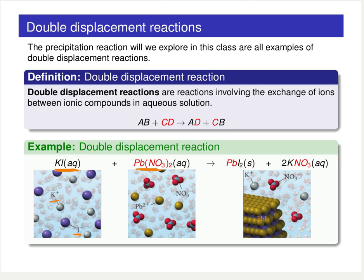The lead and nitrate are also floating around in the aqueous solution. Once the solutions of potassium iodide and lead nitrate are added together and these ions are exposed to one another, the lead and iodine atoms end up coming together and forming a lead iodide solid. Then the potassium and nitrate ions just continue to float around in solution, making an aqueous potassium nitrate solution.